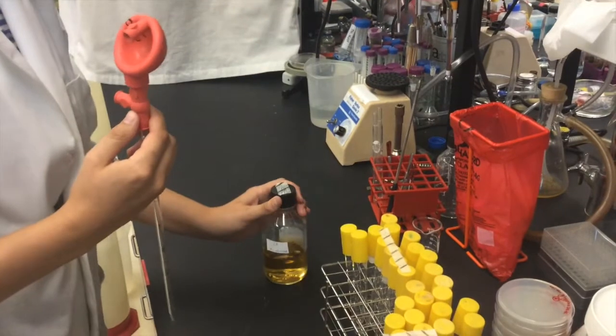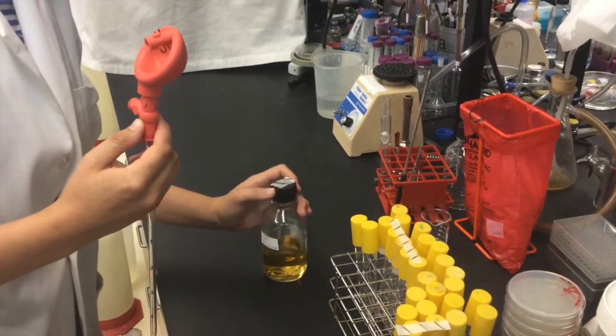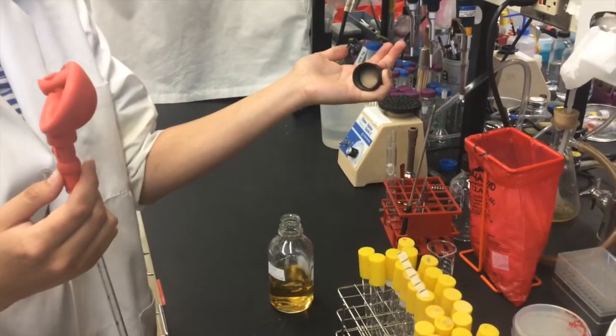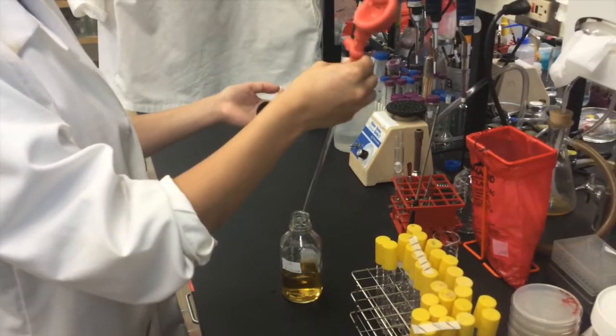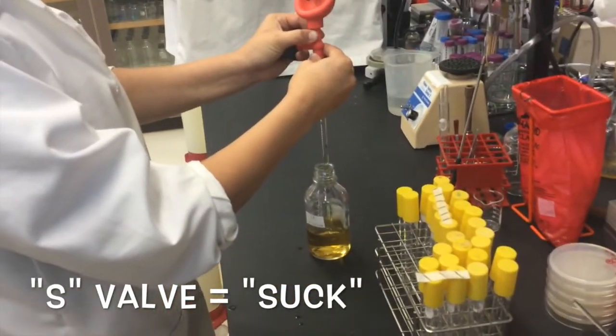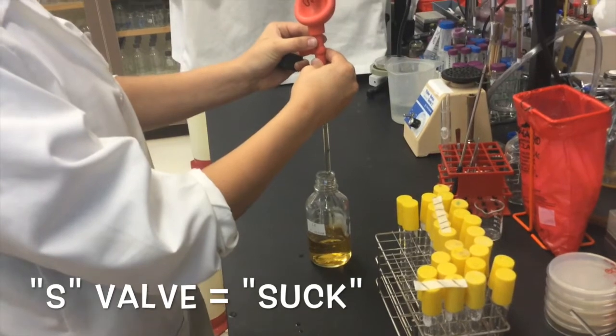Use your left hand to remove the cap from the bottle of LB. Use your pinky to hold the cap. Do not set it down on the bench. Press the S valve to suck up the fluid. Only hold it until the desired amount of fluid is in your pipette.